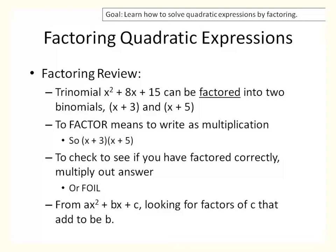So since this is called solving by factoring, a little review of factoring. Remember, a trinomial can typically be factored into two binomials. So if we look at the trinomial x squared plus 8x plus 15, it can be factored into x plus 3 and x plus 5. To factor means to write it as multiplication — factoring is starting with the product and going backwards to figure out what those two factors are, which for a trinomial are typically binomials.